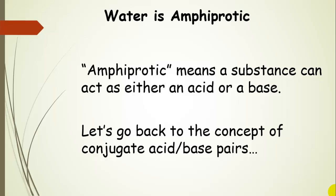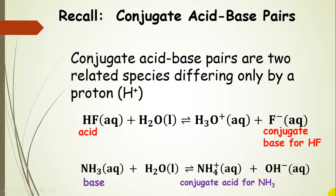Now let's go back to the concept of conjugate acid-base pairs, and let's add a few more labels to our reactions. Conjugate acid-base pairs are related species that differ only by a proton. Here we have our acid, hydrofluoric acid, and then the conjugate base, which is the fluoride anion. Here we have our base, ammonia, and the conjugate acid, ammonium.